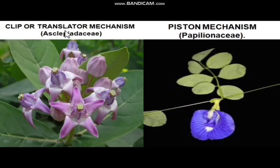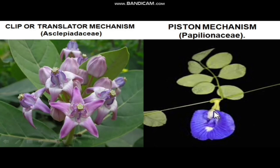The third type is the clip or translator mechanism — as seen in previous classes, when the insect sits, a clip-shaped translator attaches to the insect's legs and is carried along wherever the insect goes. The last one is the resupinate mechanism, where the corollas are arranged as a puzzle — when the insect goes in one direction it comes out in the other, and while rotating inside it fertilizes the flower. Example: Papilionaceae. These are the various mechanisms and agents helpful in pollination.